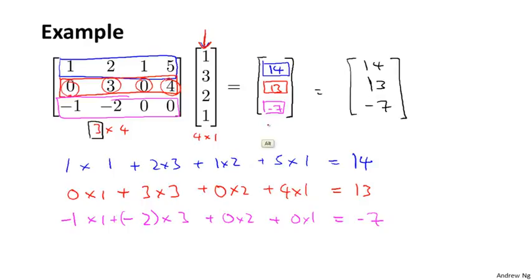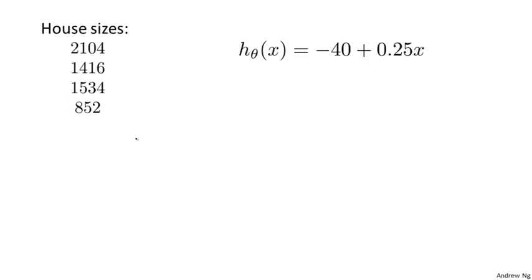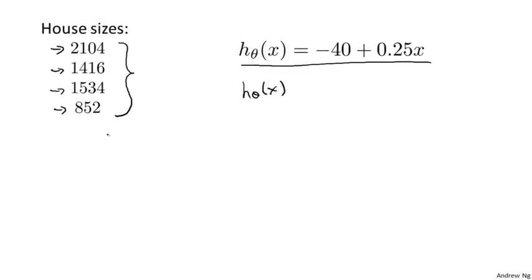As promised, the result here is a 3 by 1 matrix. So that's how you multiply a matrix and a vector. If you're not quite sure where all these numbers went, feel free to pause the video and take a slow, careful look at this calculation to make sure you understand the steps. Finally, let me show you a neat trick. Let's say we have a set of 4 houses with 4 sizes, and I have a hypothesis for predicting the price of a house. I want to compute h of x for each of my 4 houses, and it turns out there's a neat way of applying this hypothesis to all houses at the same time using matrix-vector multiplication.